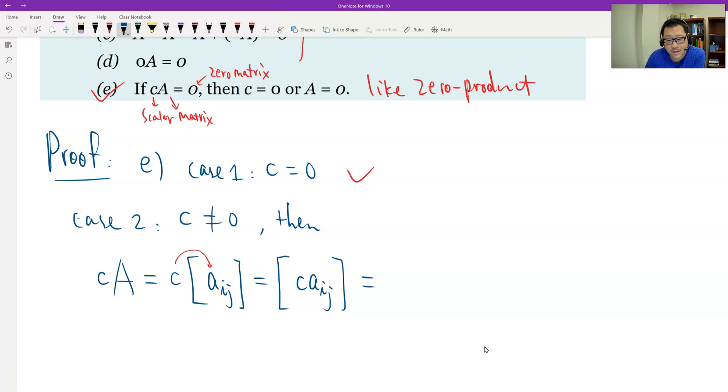And this is a zero matrix. This is a zero matrix. That's zero matrix. By the condition. If this is zero matrix, then we should have each entry C times A I J. All equals zero, right? So each entry.